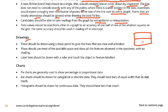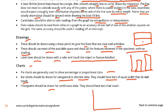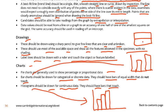Drawings should be made using a sharp pencil to give fine, clear, unbroken lines. They should use most of the available space and show all features observed in a specimen with no shading. Label lines should be drawn with a ruler and touch the object or feature labeled. Charts: pie charts are generally used to show percentage or proportional data. Bar charts should be drawn for categorical or discrete data — bars of equal width that do not touch. But histograms should be drawn for continuous data — in a histogram the bars touch. So there is a clear difference between a bar chart and a histogram.